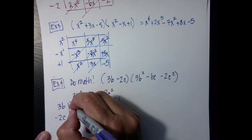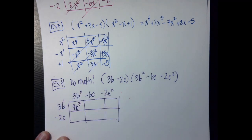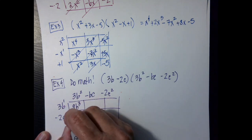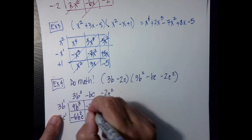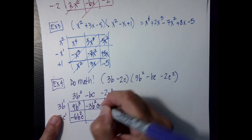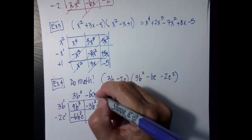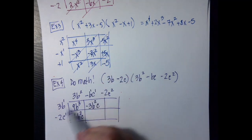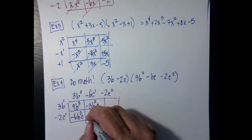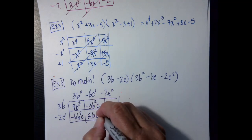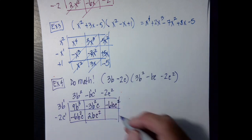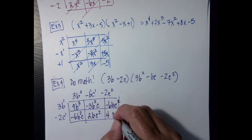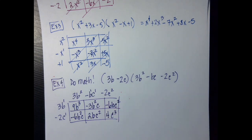So 3 times 3 is going to be 9b to the 3rd — remember that's b to the 1. This is c to the 1. 3 times negative 2 is negative 6b squared c. This one's going to be negative 3b squared c — remember that's 1. Typically we don't write the 1's, but it's helpful when we are multiplying. A negative and a negative is positive 2bc squared. This is negative 6bc squared. And then this one is positive 4c to the 3rd.